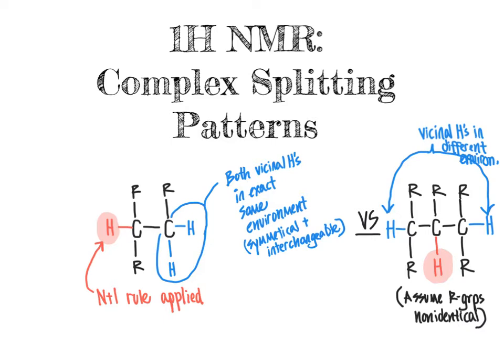One example of that is on the left, where measuring the chemical shift and multiplicity of this particular proton, we apply the n plus one rule. With two equivalent vicinal hydrogens, two plus one equals three, so we expect this signal in red to show up as a triplet. The key assumption is that those two vicinal hydrogens are in exactly the same environment — totally symmetrical and interchangeable — which is only true if there are no other vicinal hydrogens in those R groups.